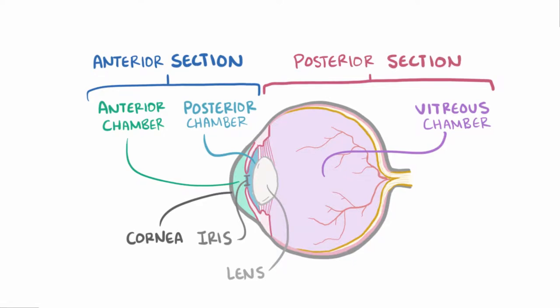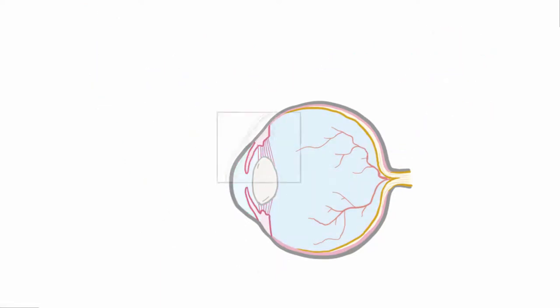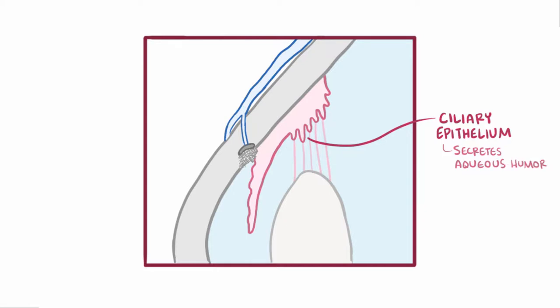Each of these chambers is filled with fluid. The chambers in the anterior section are filled with a liquid called aqueous humor, and the posterior section is filled with vitreous humor. The aqueous humor is a transparent, watery fluid that is secreted by the ciliary epithelium, which in addition to secreting aqueous humor and providing nutrients to the lens and cornea, provides structural support and helps to keep the shape of the eye.